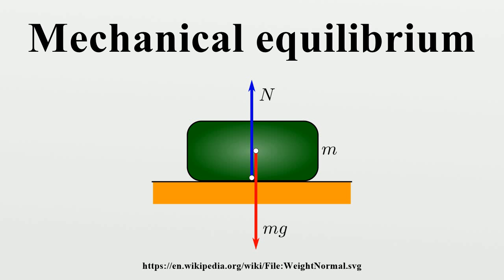If a particle in equilibrium has zero velocity, that particle is in static equilibrium. Since all particles in equilibrium have constant velocity, it is always possible to find an inertial reference frame in which the particle is stationary with respect to the frame.